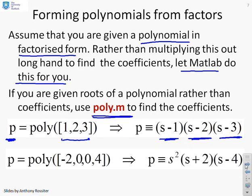What about another example? What if I did this one? p equals poly of (-2, 0, 0, 4). So that says I've got roots at minus 2, two roots at 0, and a root at plus 4. So that's this polynomial. s^2, that's the two roots at 0. s plus 2, that's the root at minus 2. s minus 4, that's the root at plus 4. So if I write that command in MATLAB, poly, brackets, minus 2, 0, 0, 4, it will produce the coefficients of the corresponding polynomial.